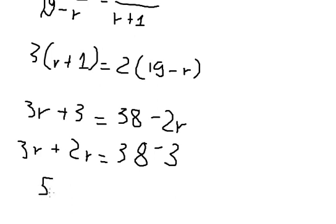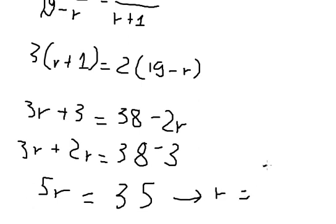This simplifies to 5r equals 35, so r equals 35 divided by 5, which gives us r equal to 7.